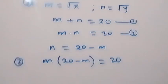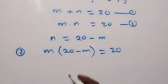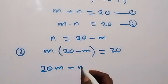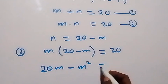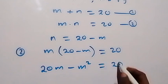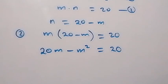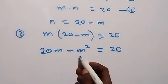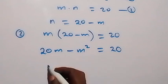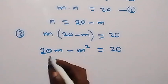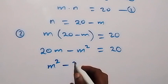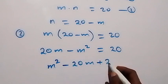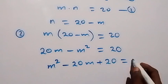When we expand this, it gives us 20m minus m squared equals 20. Let's bring everything to one side and rearrange: m squared minus 20m plus 20 equals 0.